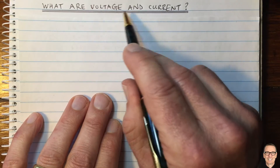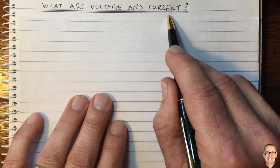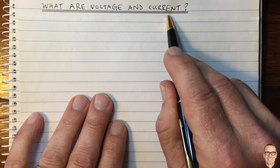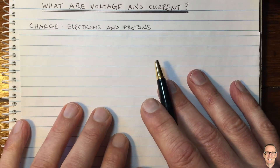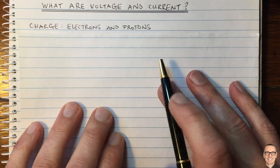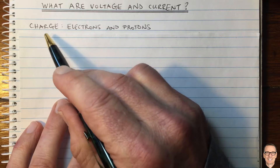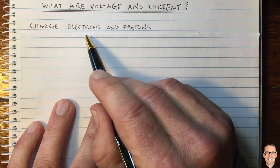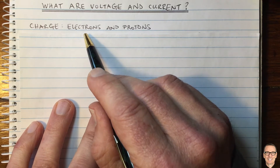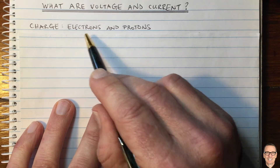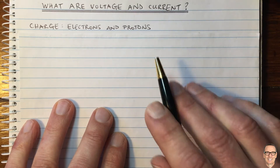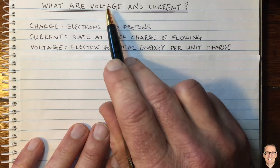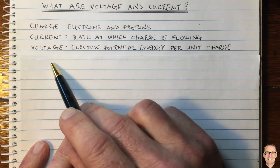What are voltage and current? To understand these concepts, we need to start with some definitions. We're talking about electricity, and electricity is based on charge. The main elements that have charge are electrons and protons. So here are some basic definitions of voltage and current.